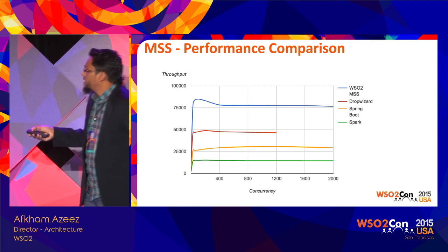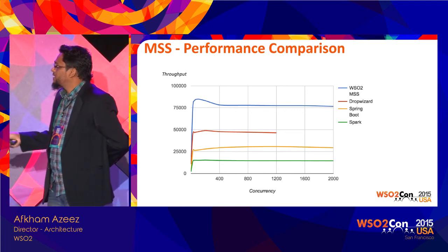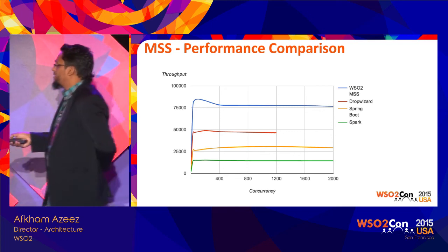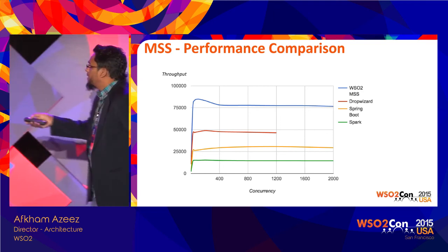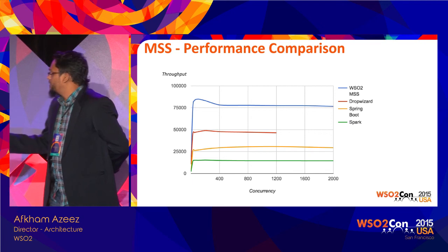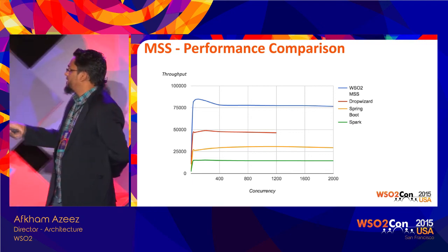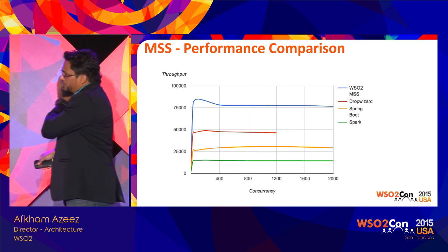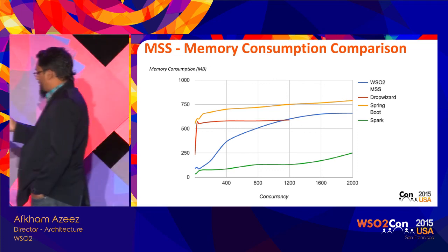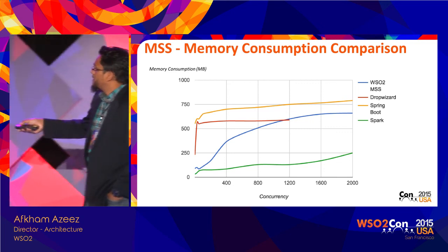Spark is a very small library — just a few kilobytes — so you could say it's lightweight, but the transport is based on Jetty, which might be the reason it's not performing as well as the other frameworks. We also compared memory consumption. Spark has the best figures when it comes to memory consumption, and MSS is around the middle.